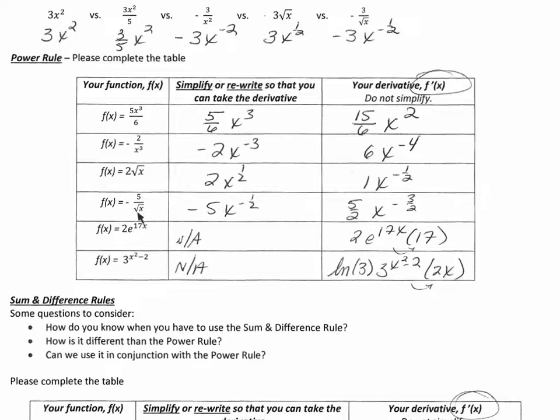This one, the root's in the denominator, x to the one half. Bring it to the numerator. It becomes negative one half. Take the derivative. Bring the negative half down. You get positive five over two. Take one away, you get negative three halves. And that's it.